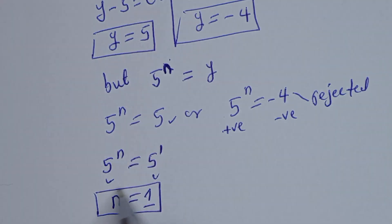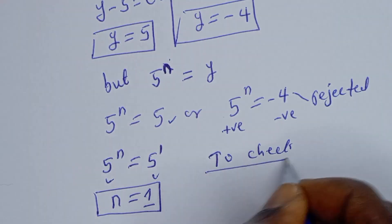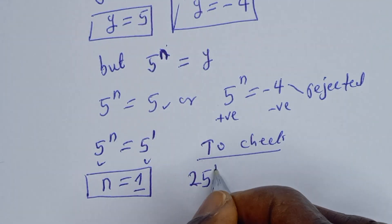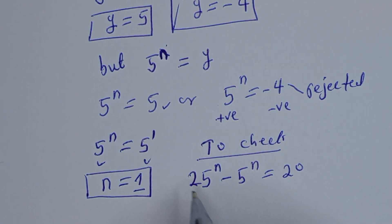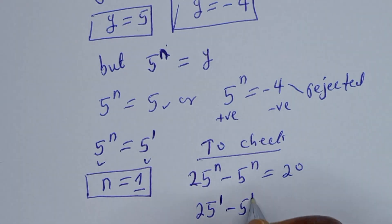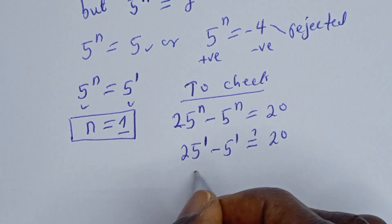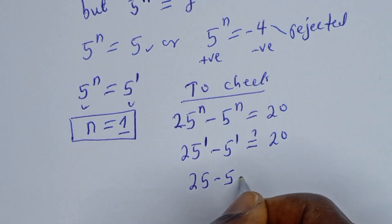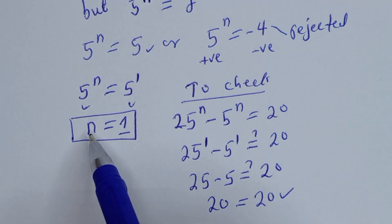We can check to confirm if our answer is right. To check, we use the given equation: 25 to the power of n minus 5 to the power of n is equal to 20. When n is equal to 1, we have 25 to the power of 1 minus 5 to the power of 1, which must equal 20. That gives 25 minus 5, which is 20 equal to 20 — true at n equal to 1.